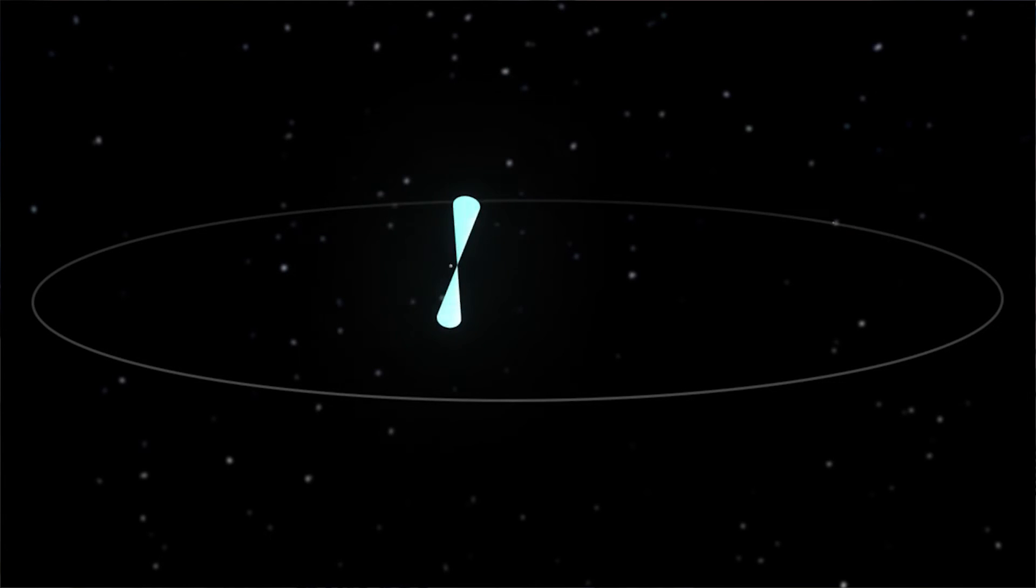They're extremely accurate clocks, almost as accurate as an atomic clock. The gravity around pulsars is so strong that we have to take into account the predictions of Einstein's theory of general relativity. We can use pulsars to test whether or not Einstein's predictions are accurate, and so far they've always passed every test that we've put them through.